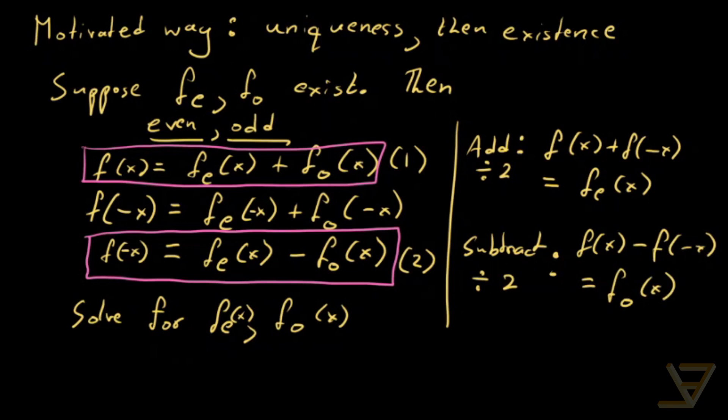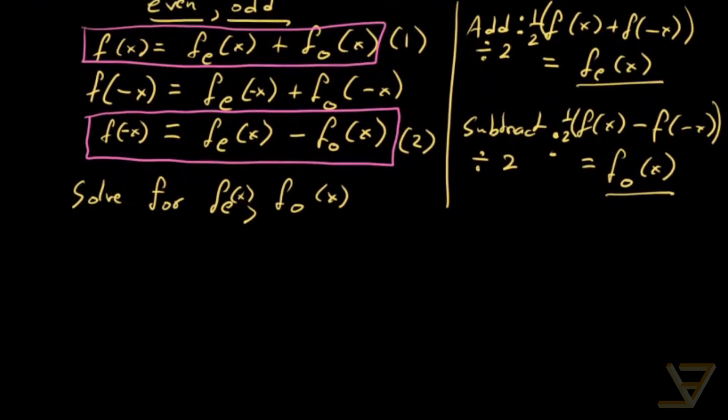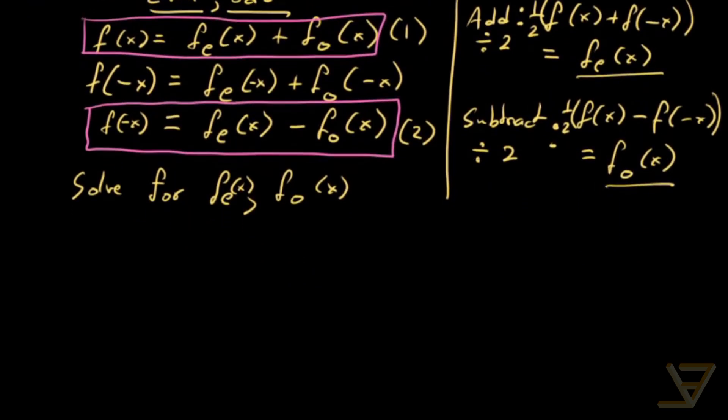So probably you've realized we've just solved for f_e of x and f_o of x in terms of f. There should be a half over here and here.